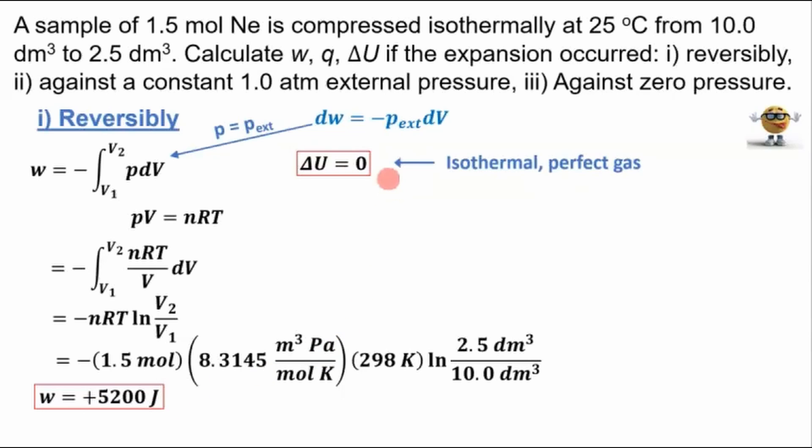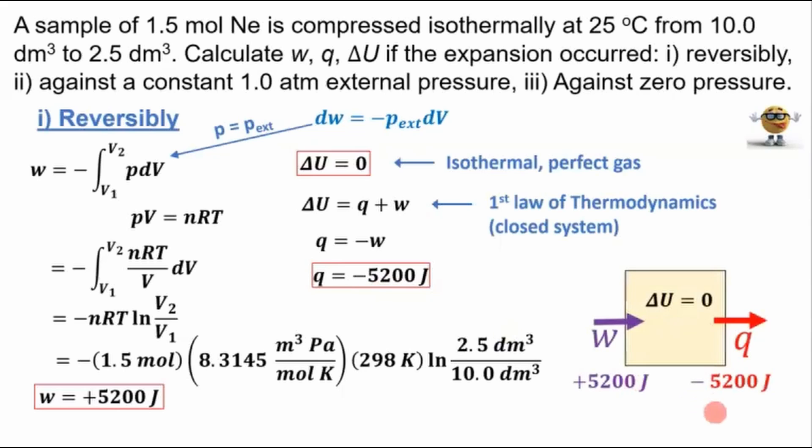Now, to get to the other parameters here, the change in internal energy is zero, and that's because the change in internal energy for a perfect gas or an ideal gas only depends on the temperature. Because the process is isothermal, the change in internal energy is zero. If we use the first law of thermodynamics for a closed system, ΔU equals Q plus W. This ΔU is zero, so the heat, the energy transferred as heat, equals negative W. We know what W is, so the energy transferred as heat is negative 5,200 joules, so the system loses 5,200 joules of heat.